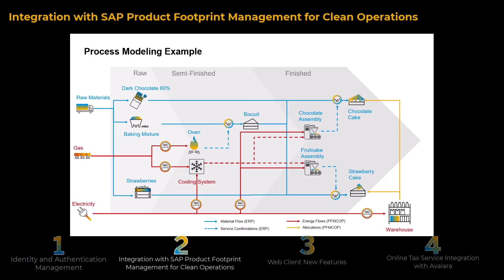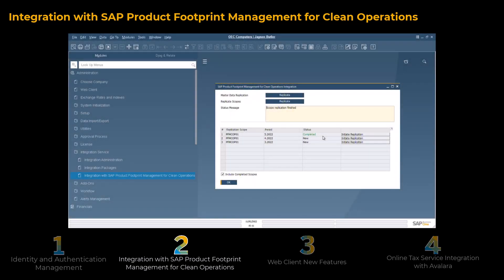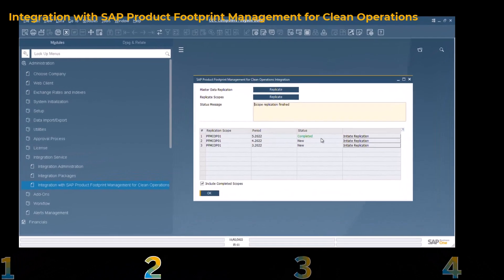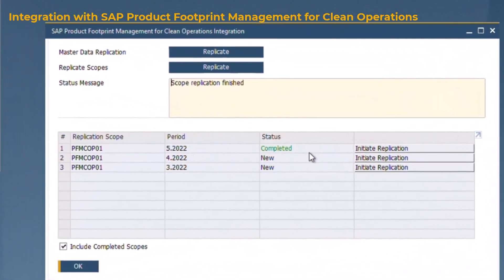The SAP Product Footprint Management Solution for Clean Operations is now integrated with SAP Business One. This cloud-native solution helps small and mid-sized companies to analyze the carbon footprint of each of their products with minimal effort. The solution allows you to evaluate and optimize the bottom-up carbon footprint on product level, gaining actionable insights that enable you to make the right business decisions. The basis for the calculation of emission data is the master data and transactional data from SAP Business One.